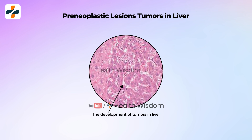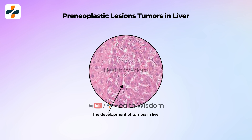The development of primary tumors is often preceded by the appearance of lesions referred to as preneoplastic. These consist of genetically and phenotypically altered cells exhibiting a higher risk of malignant evolution than normal cells.